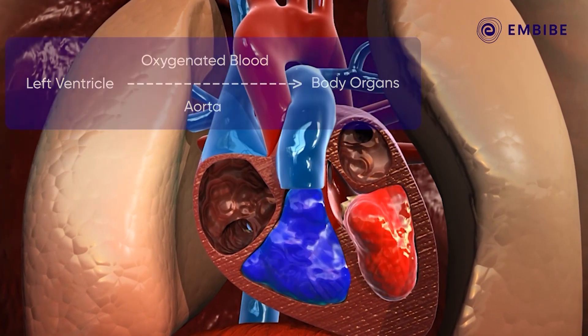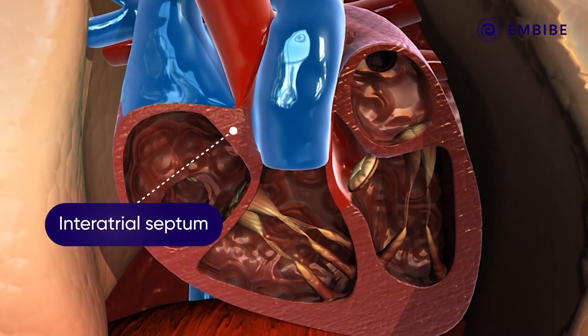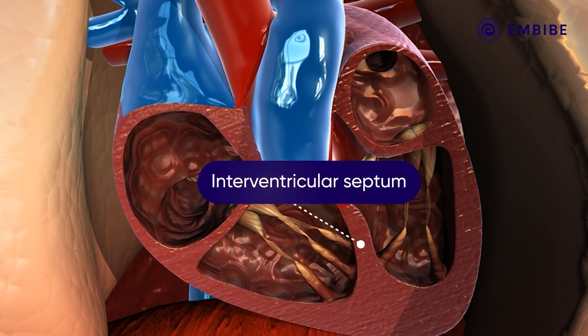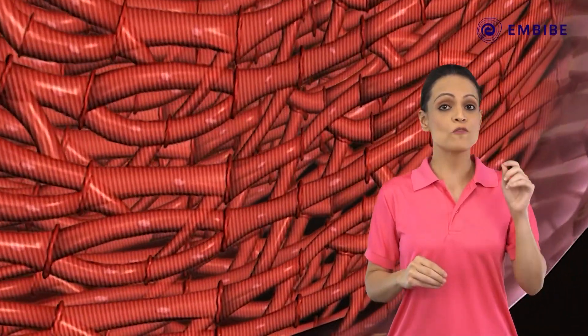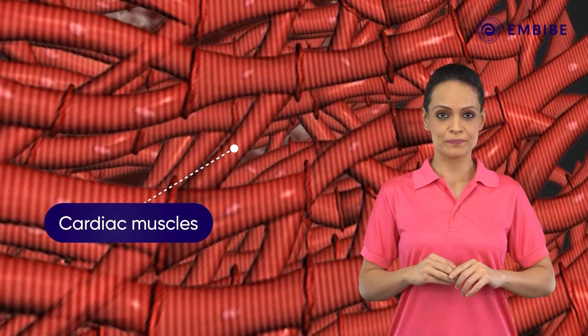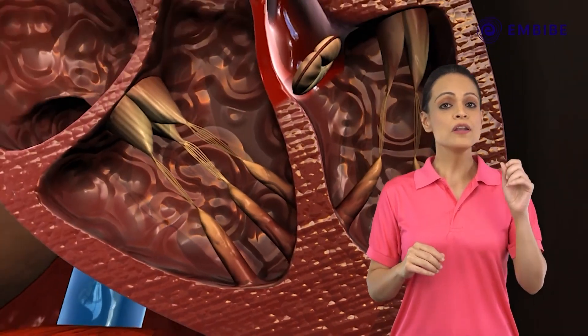The left ventricle has an ascending aorta which supplies oxygenated blood to all parts of the body. The two atria are separated by the inter-atrial septum, and the ventricles are separated by the inter-ventricular septum. The wall of the heart is made up of special types of muscles called cardiac muscles. These muscles branch out and cross-connect each other to form a complex net-like arrangement.